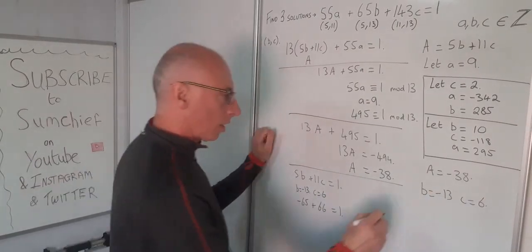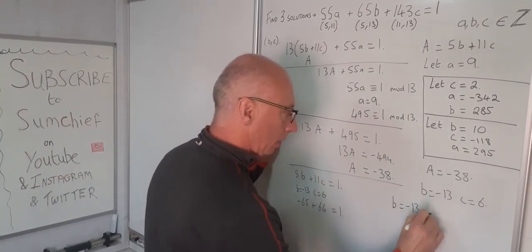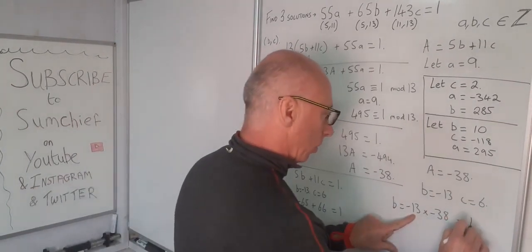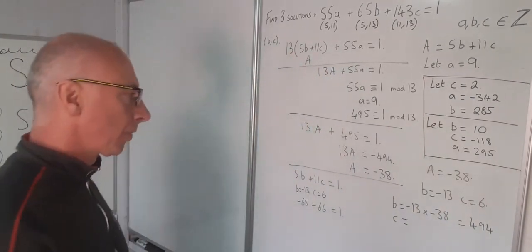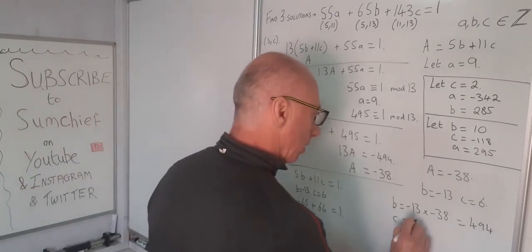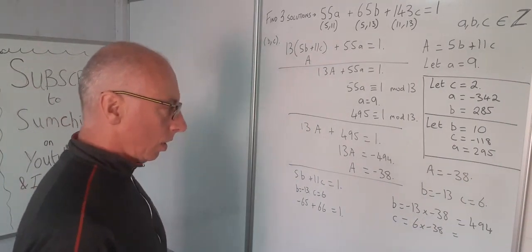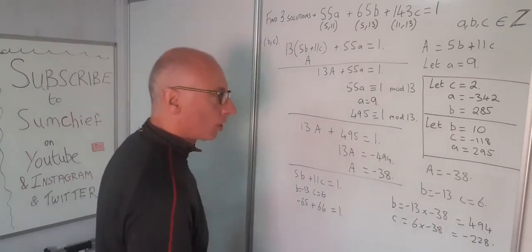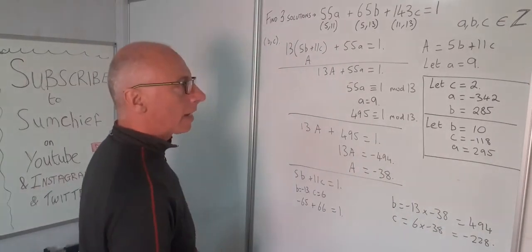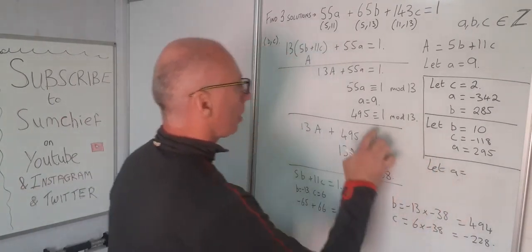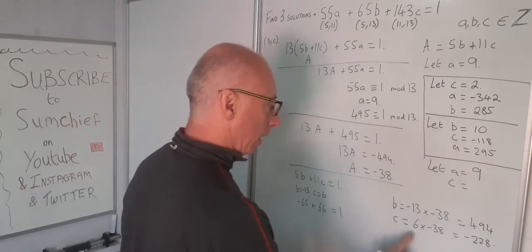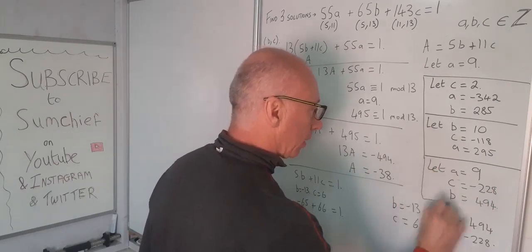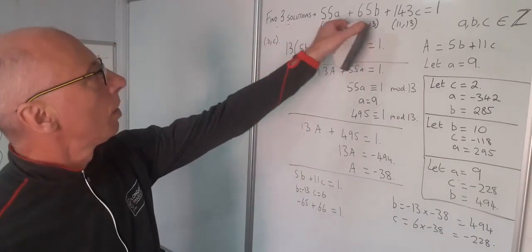So now with all this, my B equals minus 13 times capital A which is minus 38. So 38 times 13 is 380 plus 114, that's 494. And my C equals 6 times minus 38, which is minus 228. So my third set of solutions: A equals 9, B equals 494, and C equals minus 228. And that is my three solutions to this equation.